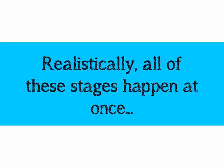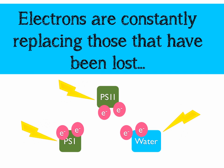All of these three stages happen at once. We can summarise this by looking at the movement of the electrons — electrons are constantly replacing those that have been lost from the previous donor. So we have to imagine that photosystem 1, photosystem 2, and water are all struck by light simultaneously, and the electrons move on and replace.